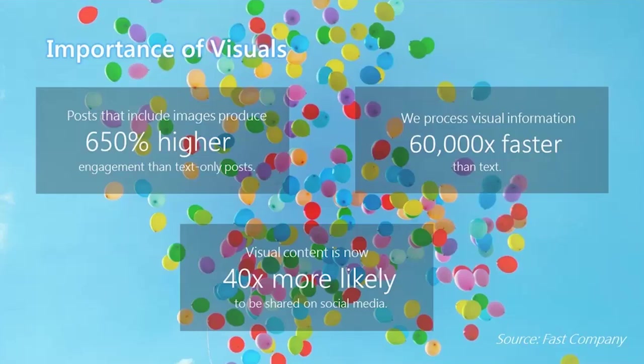When creating content for social media, whether it's paid or organic, visuals are critically important. Research shows that posts that include images produce 650% higher engagement than text-only posts. We process visual information 60,000 times faster than text, and visual content is now 40 times more likely to be shared on social media. If you want to succeed in this space, you must invest the time, energy, and resources to highlighting your work in a visual way. Some of you may have designers and social media managers on staff, while others may not have social media accounts at all.